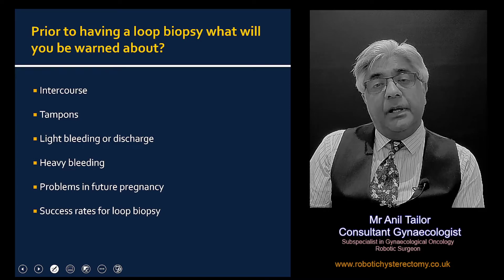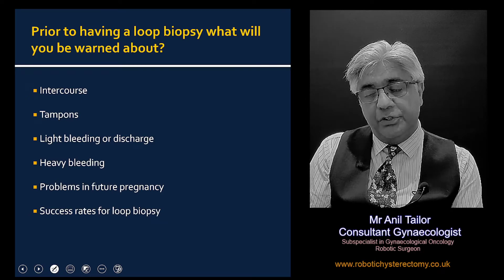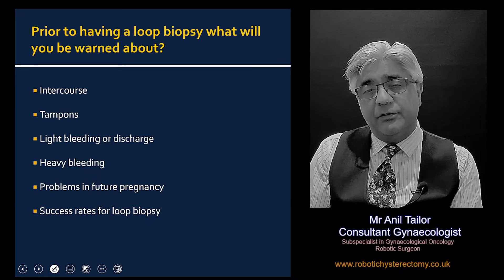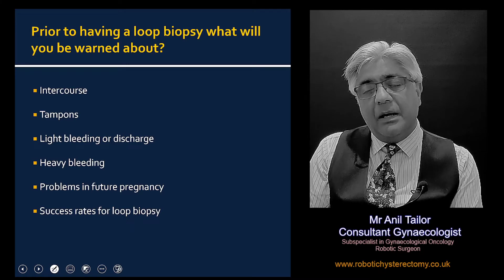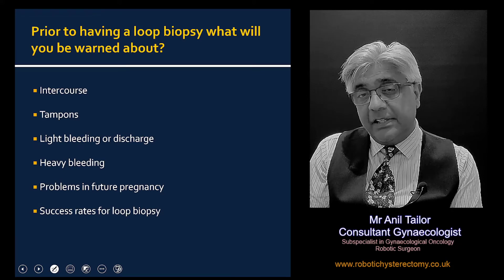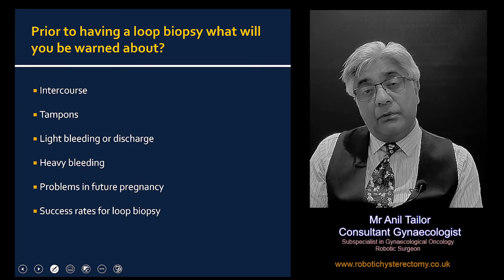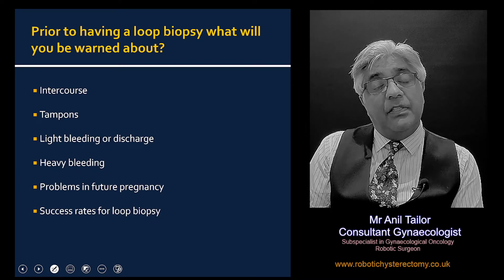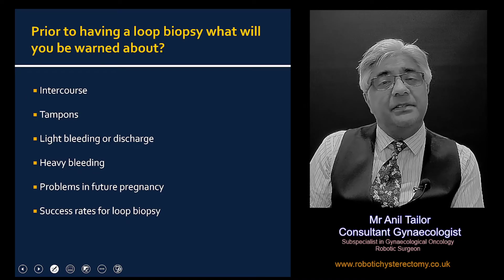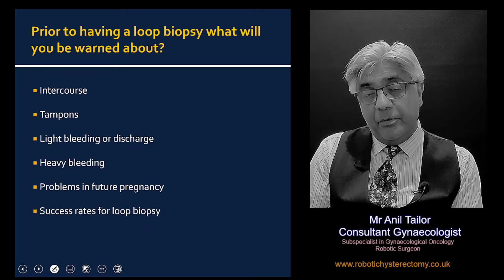You will also be told about the success rate of this procedure. The loop biopsy is fairly successful in removing the abnormality — I would say about 85 to 90% successful in getting rid of the pre-cancer cells. Meaning if we were to repeat the smear say 6 months down the line, the smear will be normal at that stage. That is the sort of success of the loop biopsy in treating the abnormality.